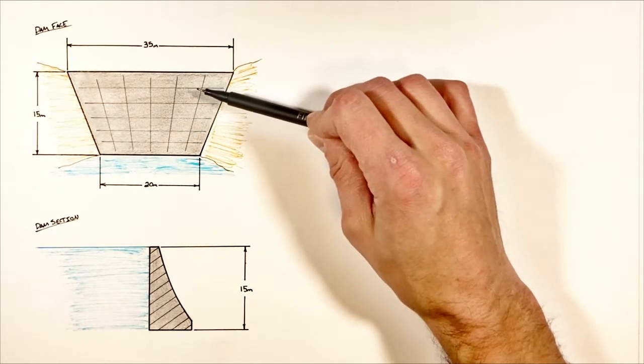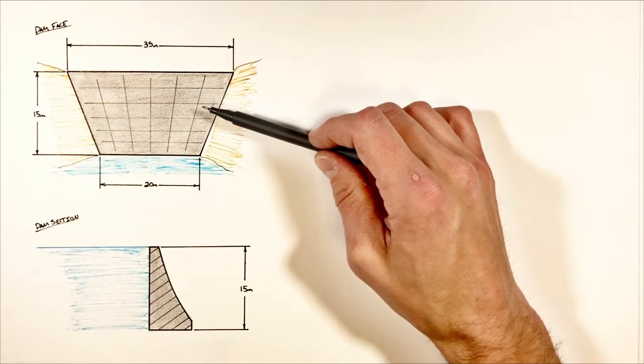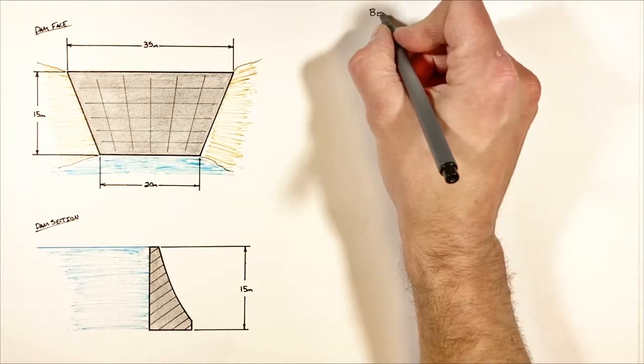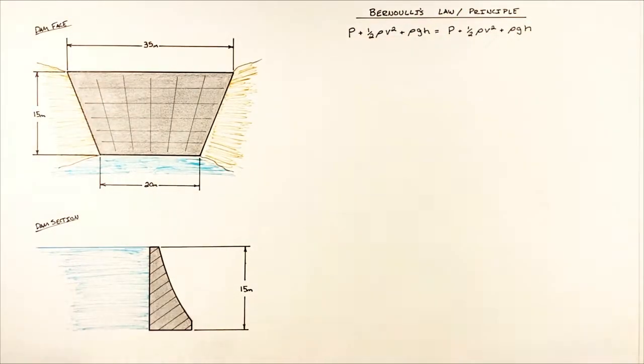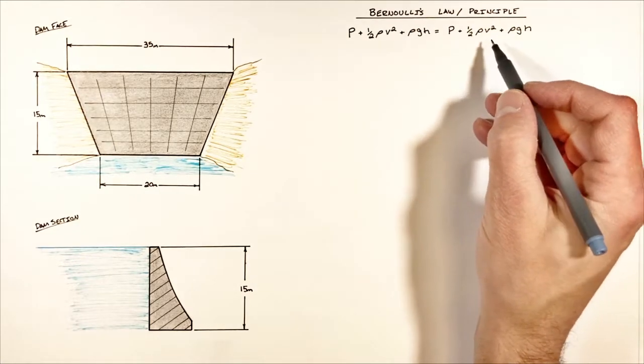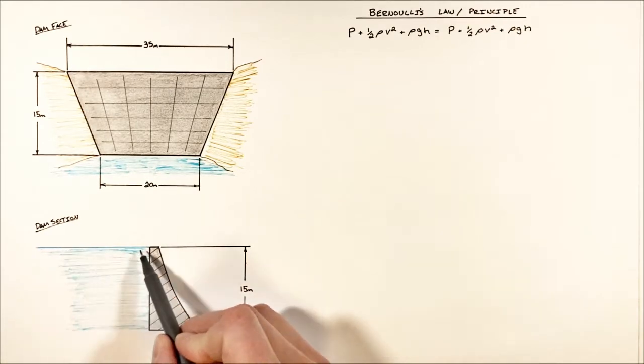In order to find the total force, the first thing we're going to need to do is look at the pressure on the dam. To do that we're going to take a look at Bernoulli's law and apply Bernoulli's law to two points on the fluid acting against the dam: the first point being the surface of the water, the second being at some height h above the base of the dam.